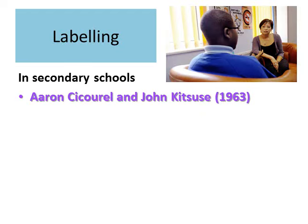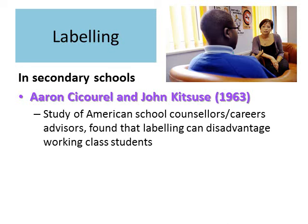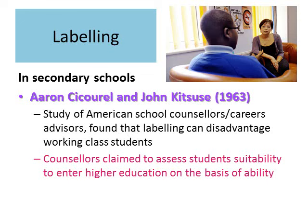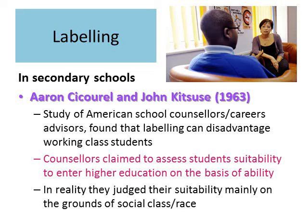Sikora and Kitsuse also looked at this issue. They studied American school counsellors and careers advisers and found that labelling can disadvantage working class students. Counsellors claimed to assess students' suitability to enter higher education on the basis of their academic ability, but in reality they were judging suitability mainly on the grounds of social class or race. This meant counsellors told white middle class students they were perfectly capable of doing well in higher education, whereas with black, Asian, or minority ethnic working class students they would often say, 'Have you thought about getting an apprenticeship or going straight into the world of work?' — demonstrating a sense of discrimination or prejudice against certain groups.